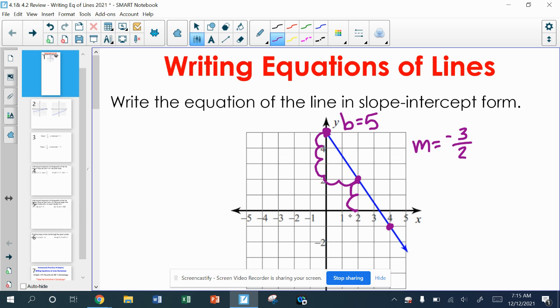I could do that again, down 3 over 2. So I know my slope. I know my y-intercept. The equation is going to be y equals negative 3 over 2. Don't forget the x plus 5.